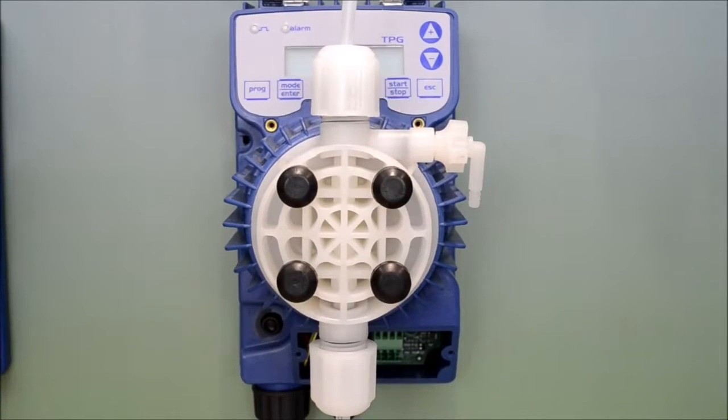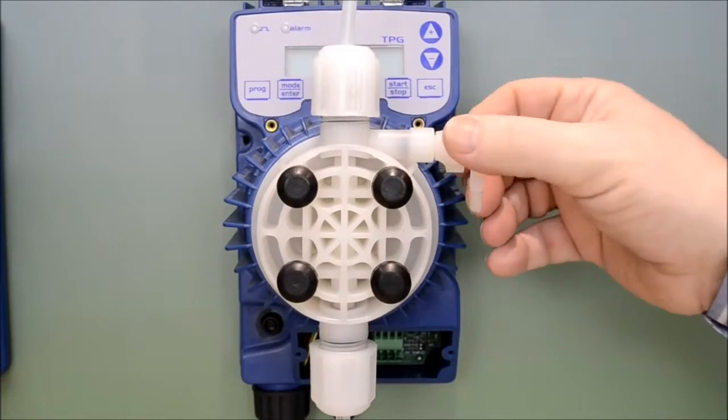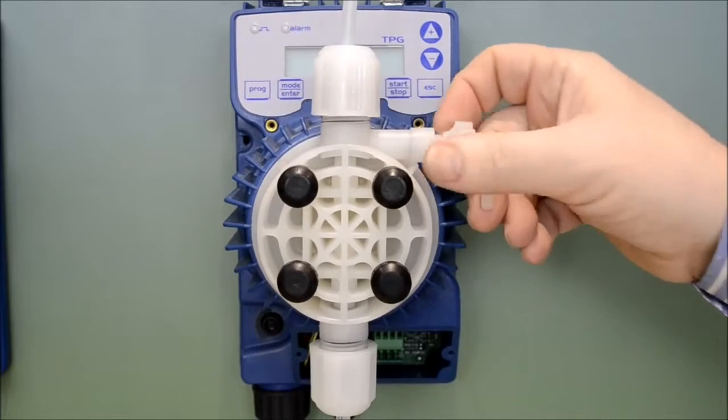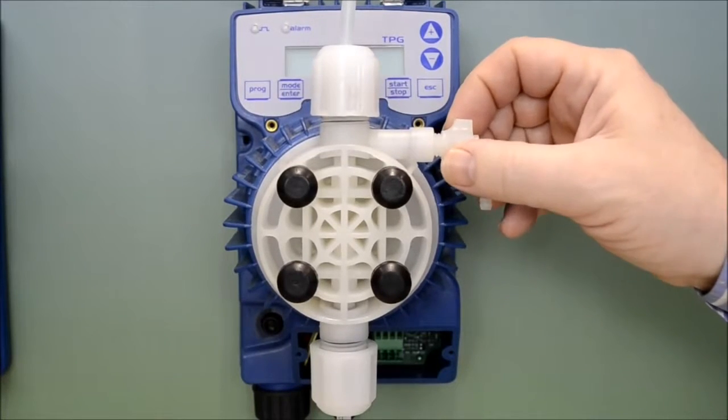If the pump has been out of service for some time it may require some assistance with priming. This can be done by releasing the bleed valve allowing excess air or liquid to remove from the pump head.